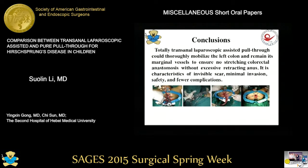In conclusion, transanal laparoscopic assisted pull through could thoroughly mobilize the left colon and preserve its marginal vessels to ensure a tension-free colorectal anastomosis. Without excessive retracting of the anus, it is characterized by less bleeding, shorter operative time, fewer perioperative complications, and faster recovery, because this technique can identify the transitional zone via intraoperative biopsy prior to mobilization of the colon.